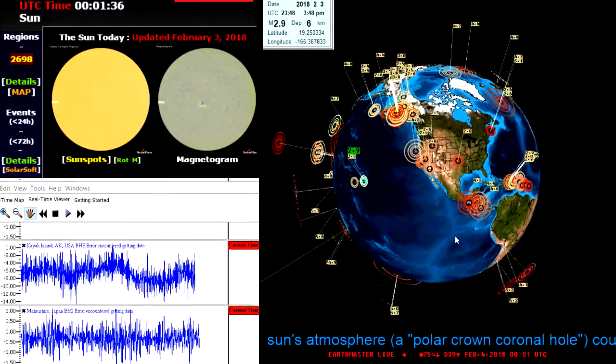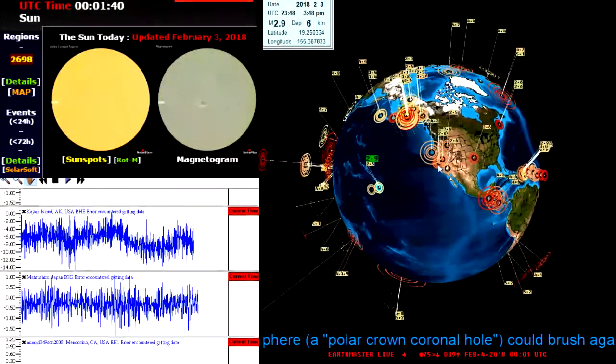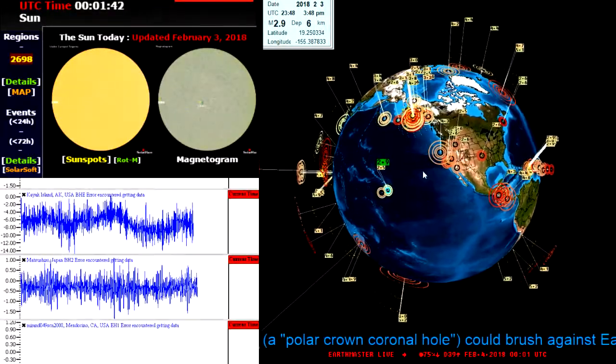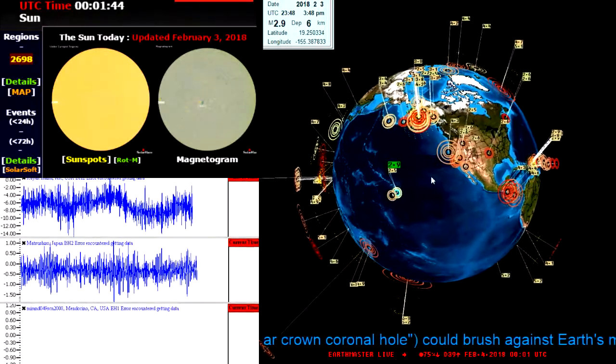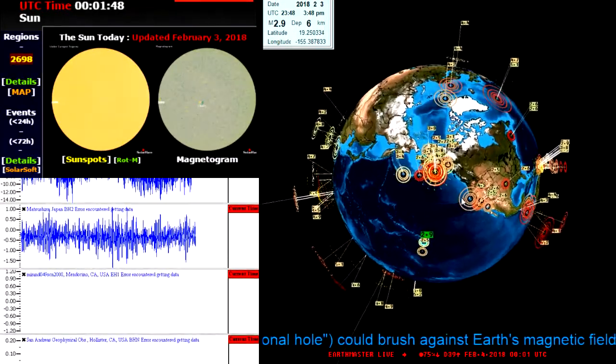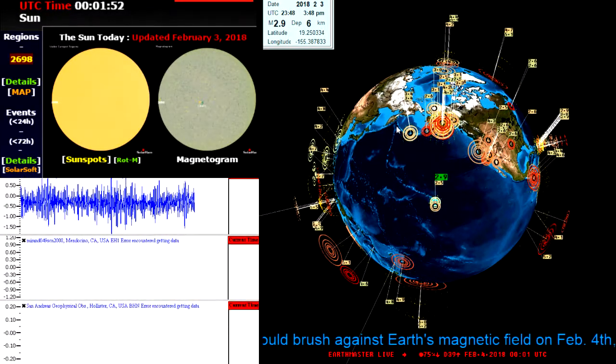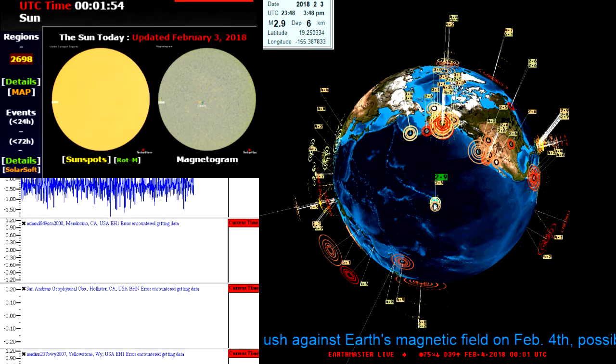Yesterday we had a 4.3 off the northern California coastline. I'll get to that here in just a second and show you exactly what is in play according to that earthquake there. Activity continues up in the Aleutian Islands region of Alaska, a couple threes heading off over here to the west.